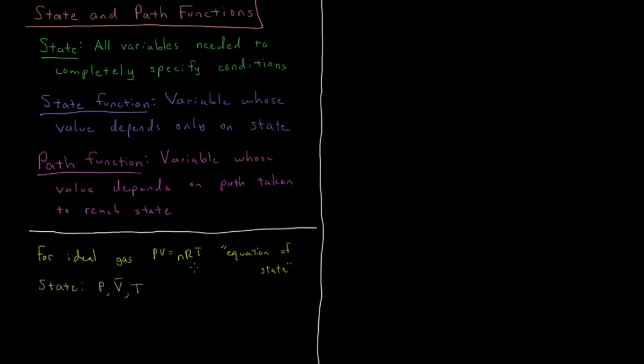For a monatomic ideal gas, that's just 3/2 NRT. It doesn't depend on how I prepared the state or what path I took to get there. It only depends on the value of these variables and the state of the system at this moment in time. So internal energy is one example of a state function.